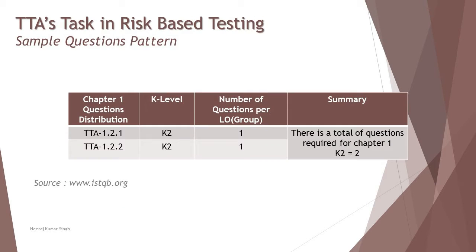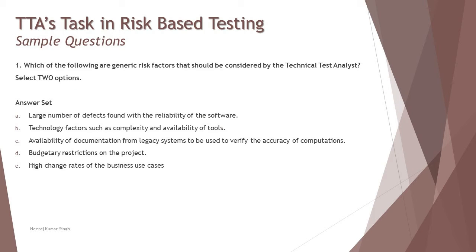The number of questions and question pattern expected from chapter 1: we will have two questions at K2 level from the basic topics. One is the responsibilities of the technical test analyst and the second is from risk-based testing. Importantly, at the advanced certification level, questions may have more than four options and may ask you to pick more than one correct option.